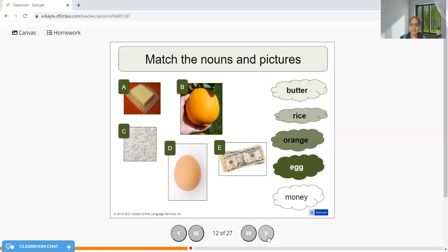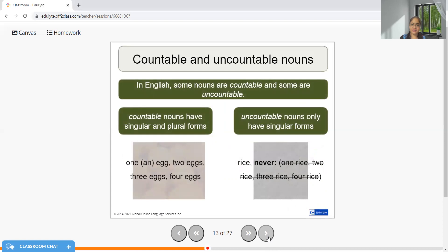I can have many oranges, many eggs, but I cannot have many monies. I can have money. So if you notice the pattern, there are certain words which do not have S or ES after them. They are used in that manner only because these are referred to as uncountable.